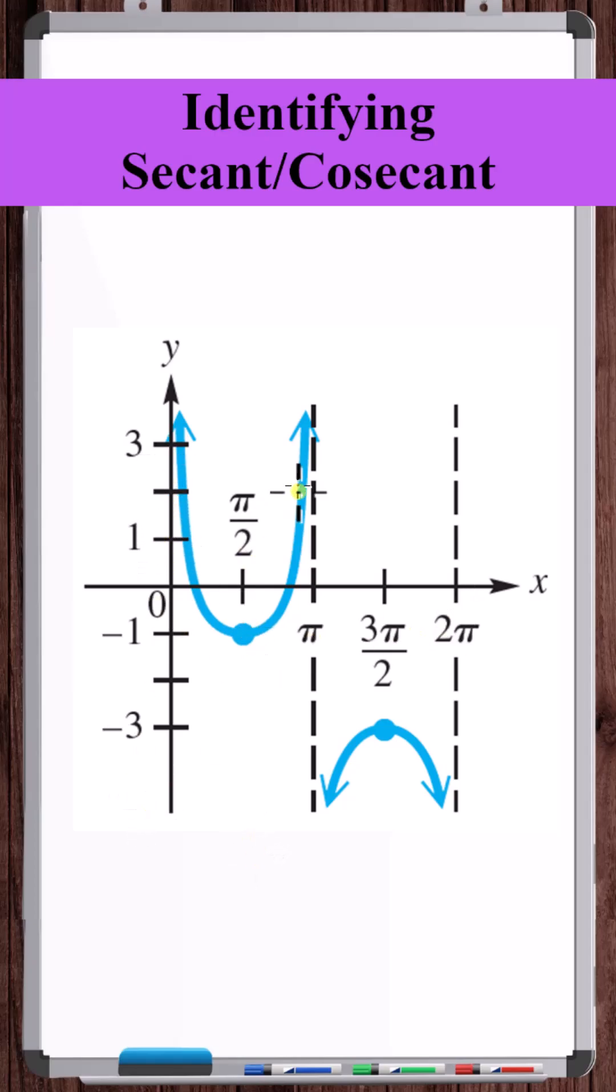The period, which contains three total vertical asymptotes, we can see is 2π, and the period of just standard cosecant is also 2π. So there's been no stretching or shrinking about the x-axis. So we've got just cosecant x.